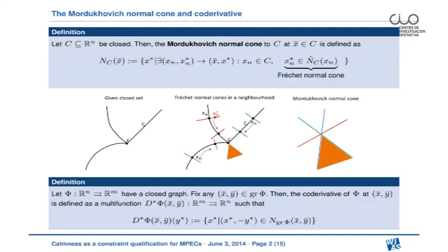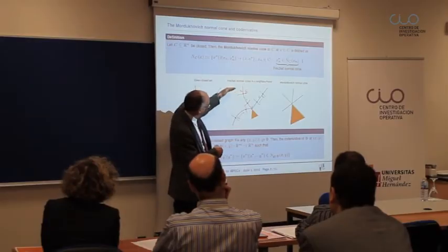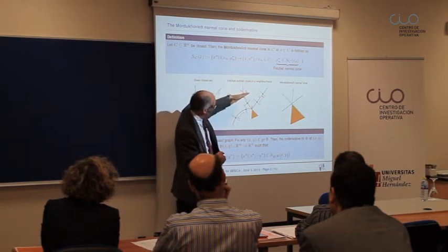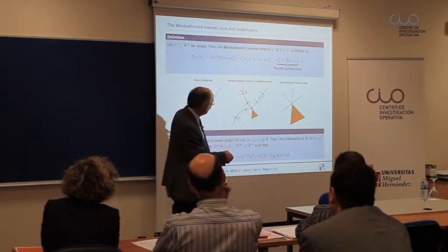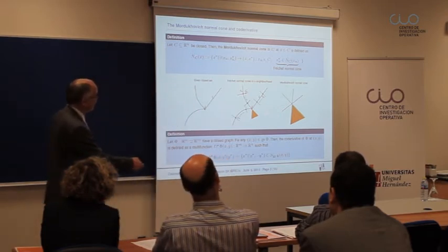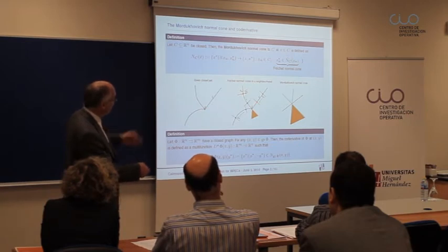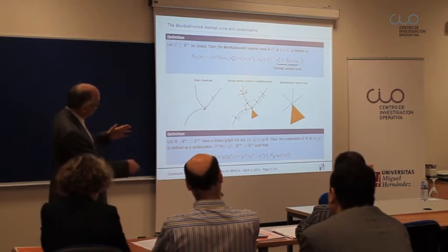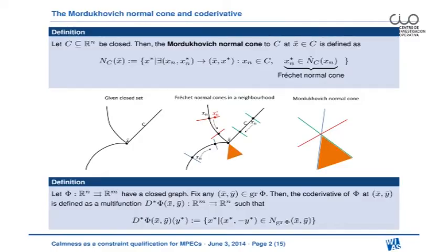Apart from this Fréchet normal cone at x-bar itself, we also have to consider sequences x-n moving to x-bar and belonging to the set C. In these elements x-n we have to again calculate the Fréchet normal cones, which is very easy here because these are smooth curves — just the normal space in the sense of classical analysis. This red straight line moves as x-n approaches x-bar and in the limit we get the red line illustrated on the right-hand side. Similarly for the other strata we get the blue and green lines. The union of all these pieces makes up the Mordukhovich normal cone at x-bar to this particular set C.